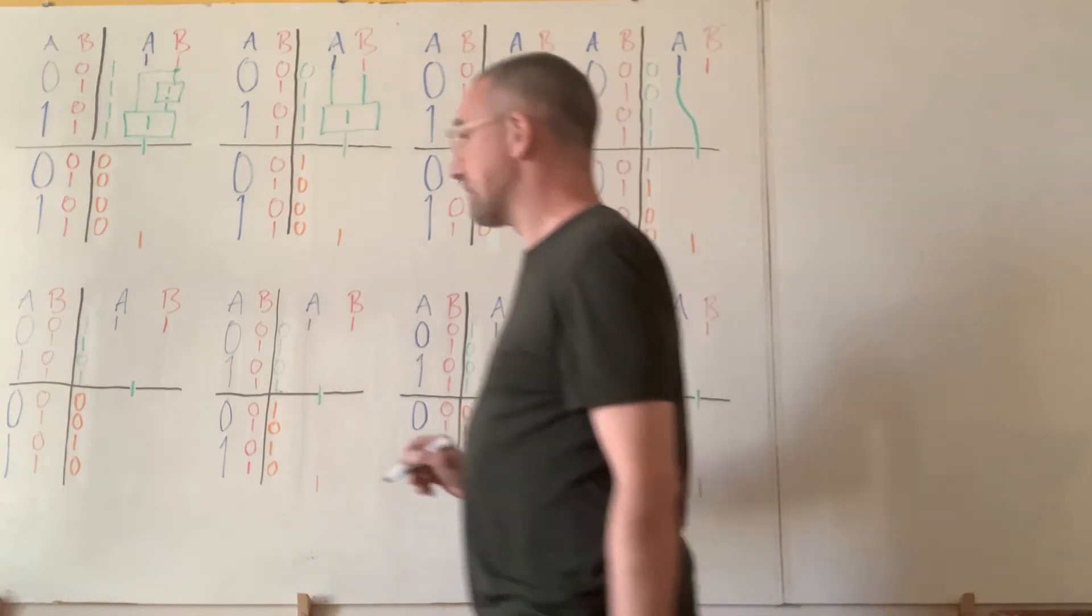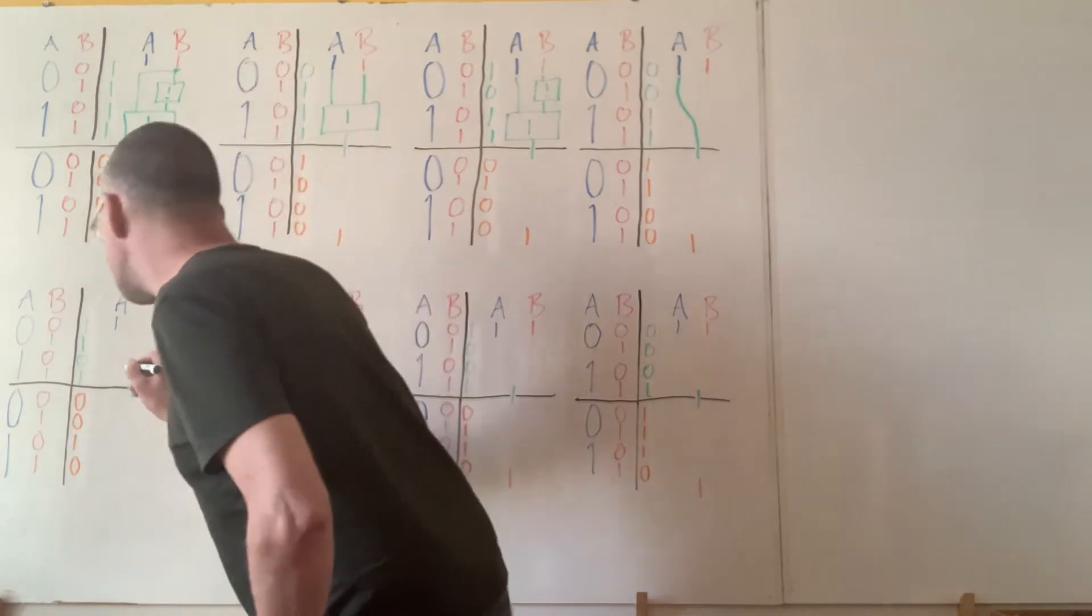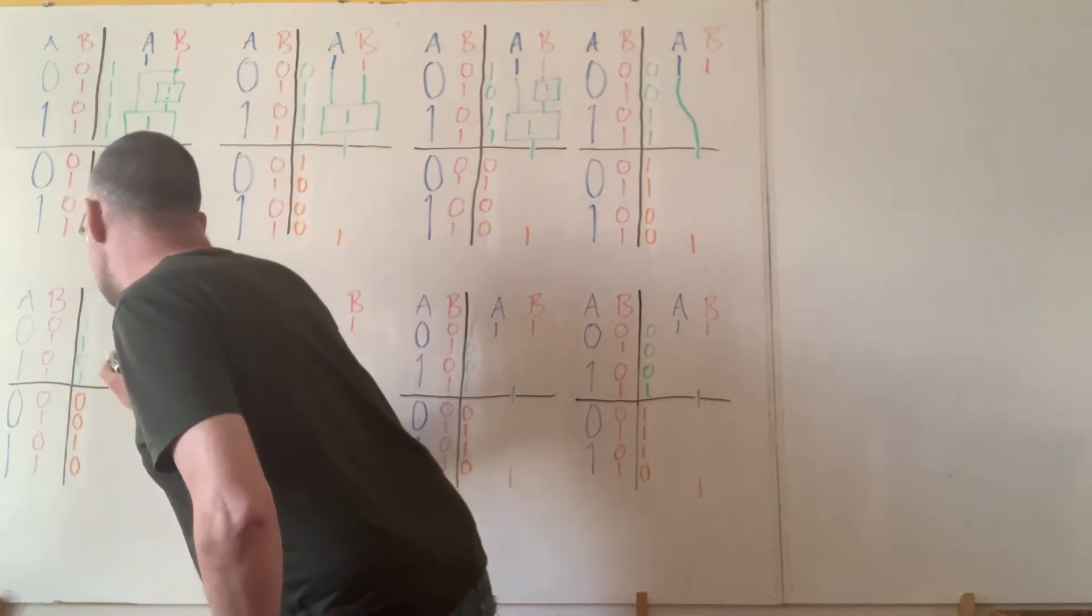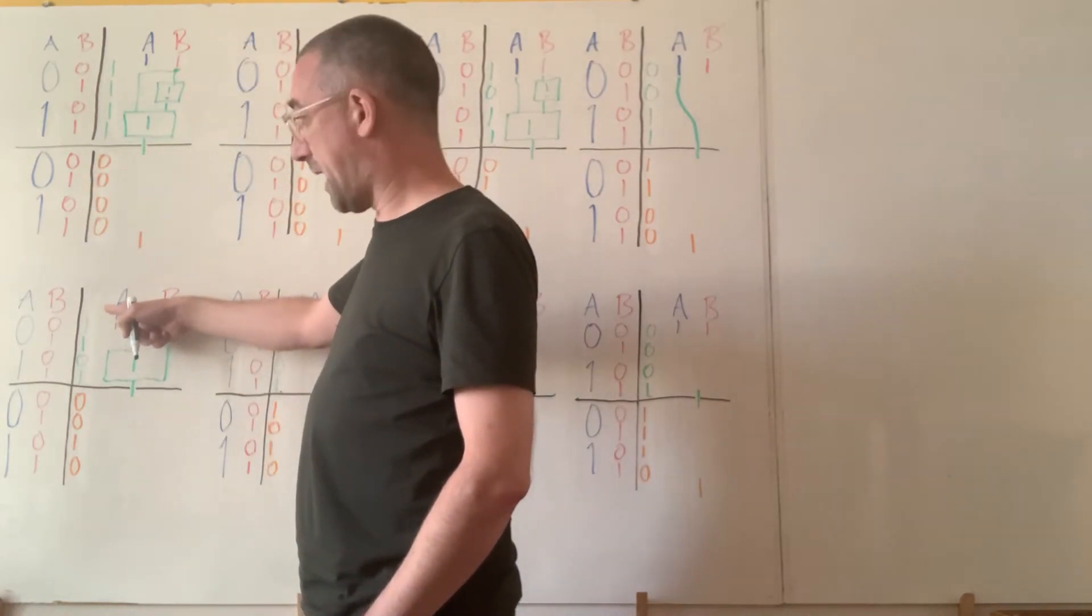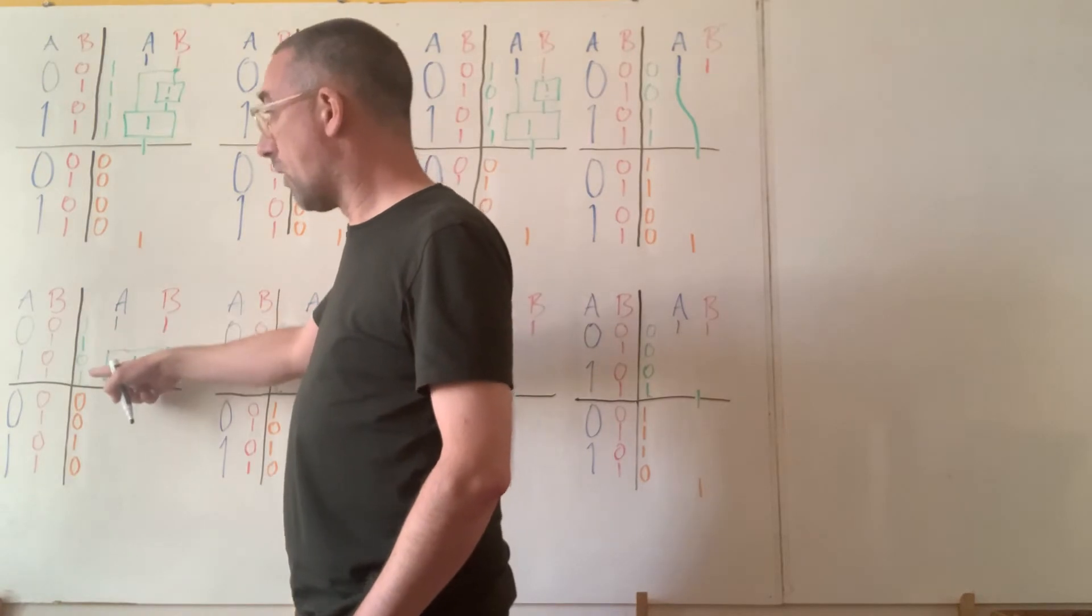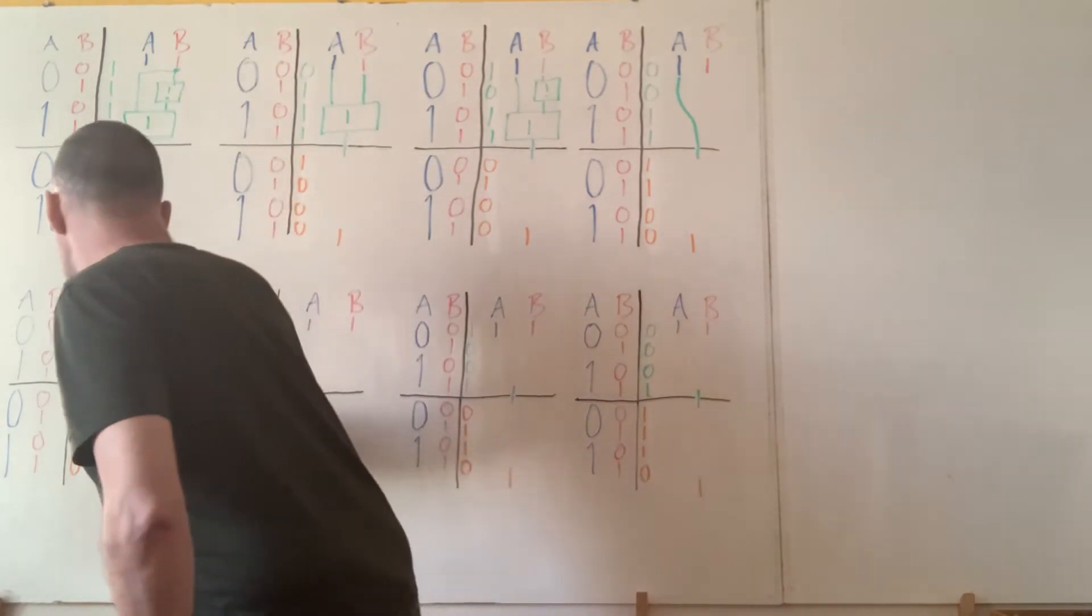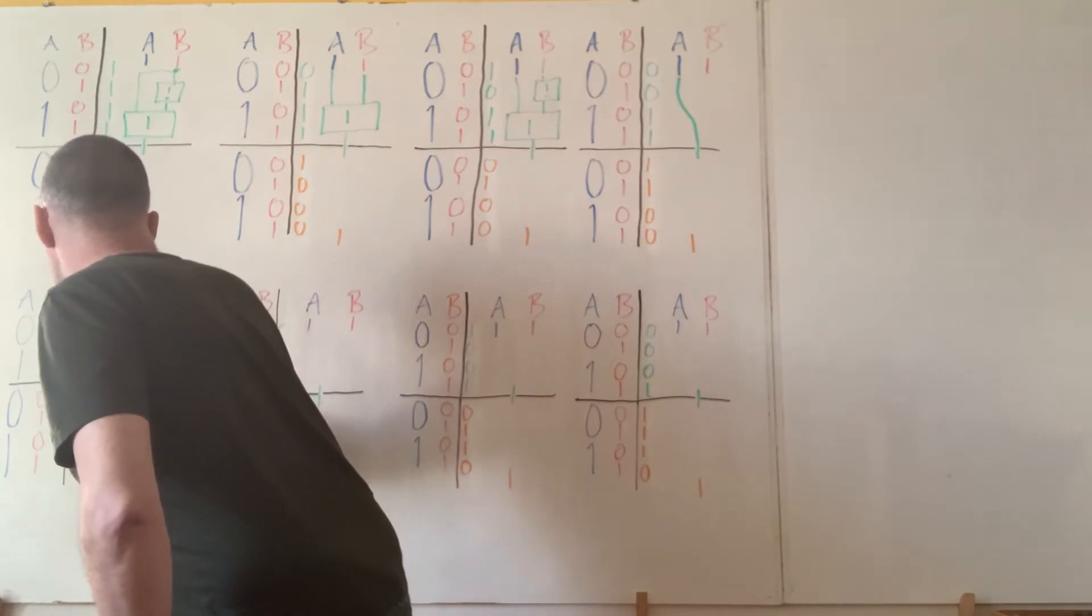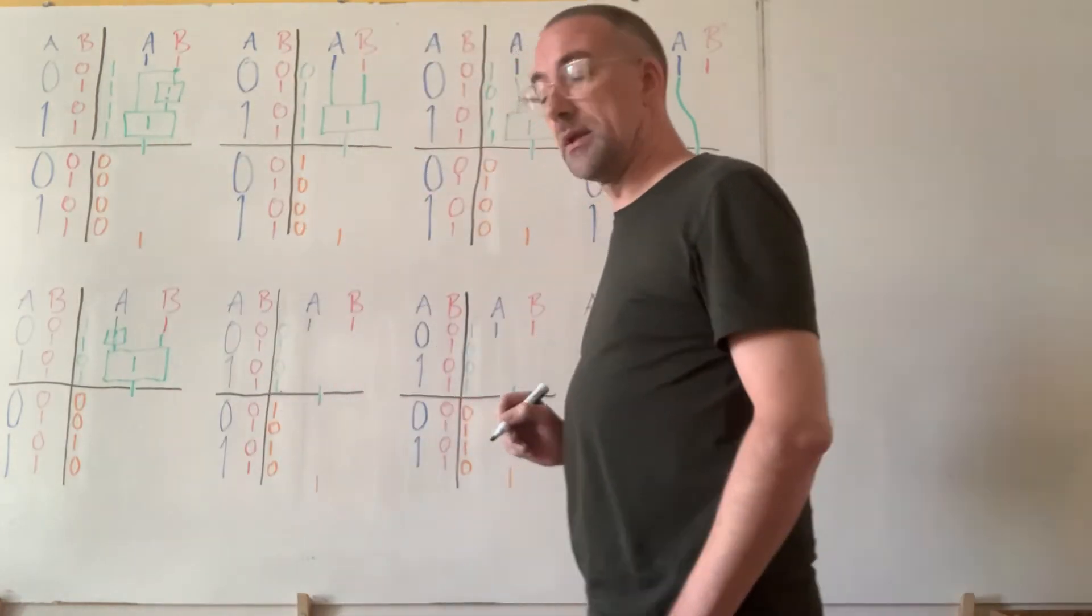Alright. Next up, very similar to one we had a moment ago. We can see that here we get a 1 coming out either if A is false or B is true. So, I'm going to just put a NOT gate in there and wire B up directly.